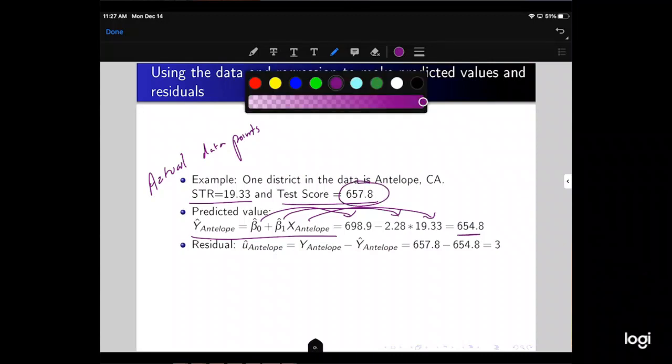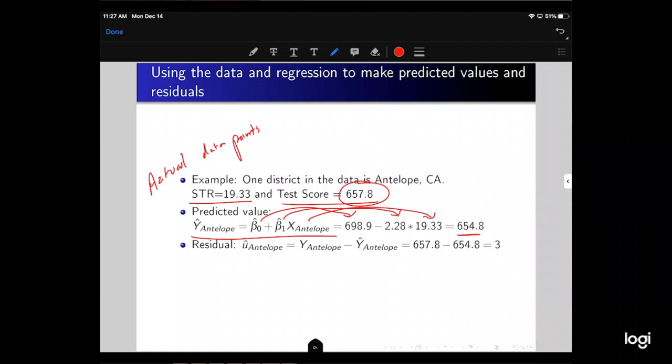Here is the actual value for Antelope. Here is the predicted value for Antelope based on our regression line. So what we're doing here is, if this is student-teacher ratios and this is test scores, and this is the actual data point for Antelope, here's our regression line. We're getting the predicted value right there, the one that falls actually on that regression line. This is the Y hat for Antelope. This is the actual Y for Antelope, the actual data point, and the regression line is getting the predicted value, and then the difference is the residual, and the residual is just going to be equal to three. So that difference is equal to three, and that's what we're getting with the residuals. We're minimizing those residuals with ordinary least squares, and we can get predicted values with our estimated regression line.